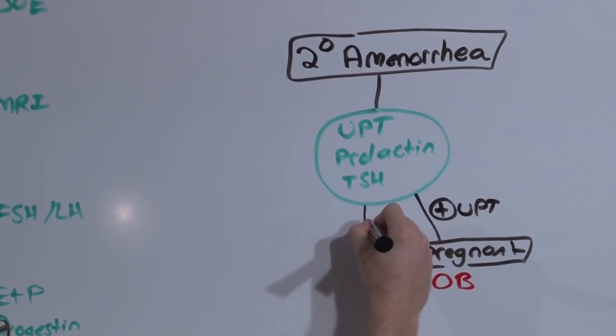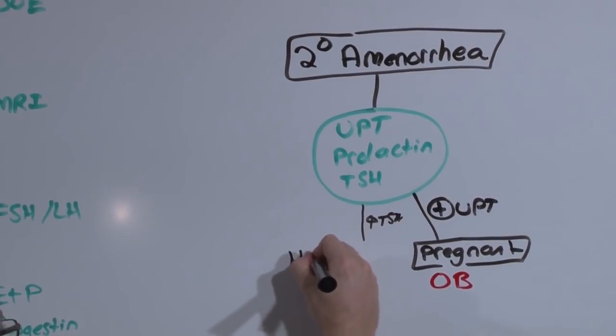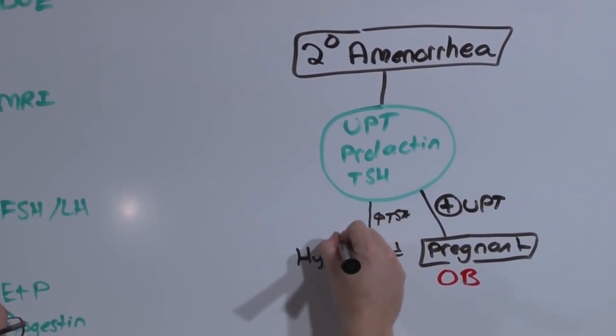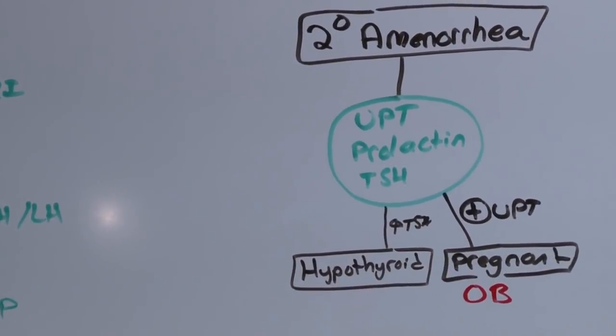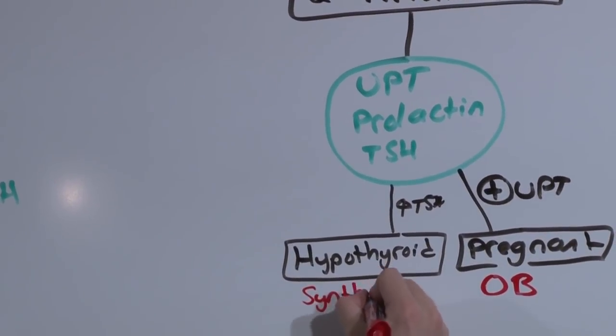If the TSH is elevated, she's got hypothyroid. Give her what she doesn't have. Give her Synthroid, Levothyroxine. Give her the T4 she needs.